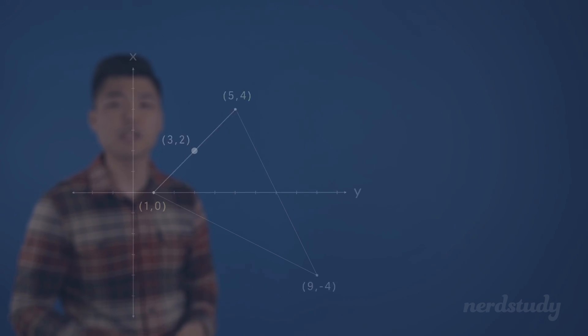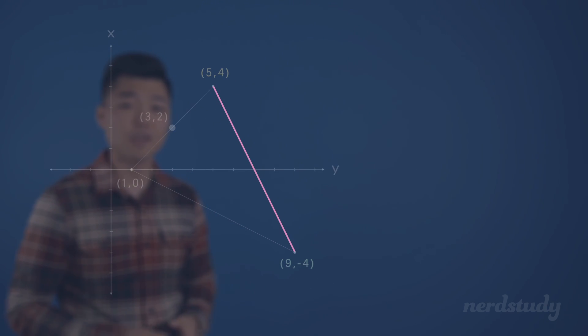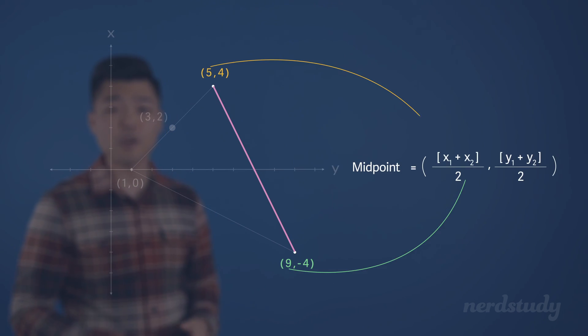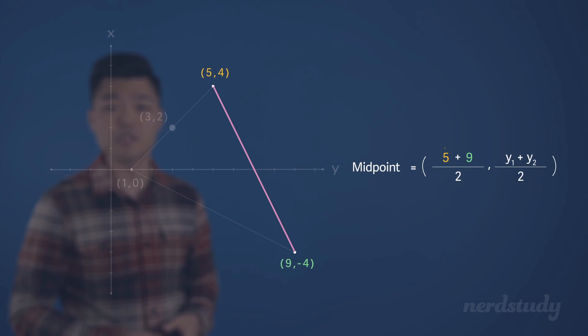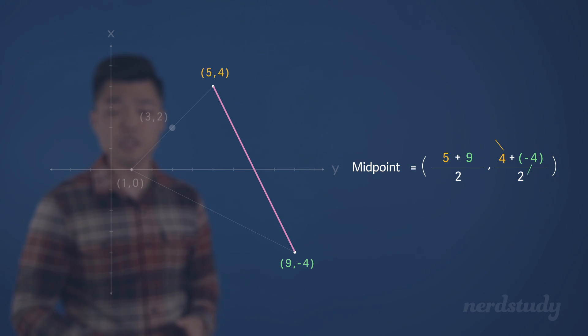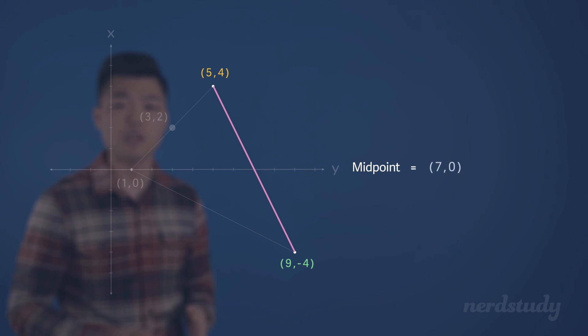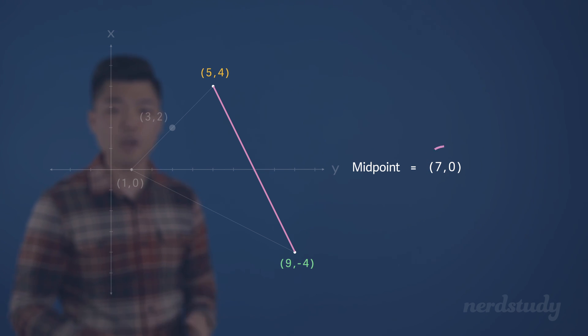What about this line here? If we plug our coordinates into the formula, we would get this, which simplified equals (7, 0). So let's plot that on the graph as well.